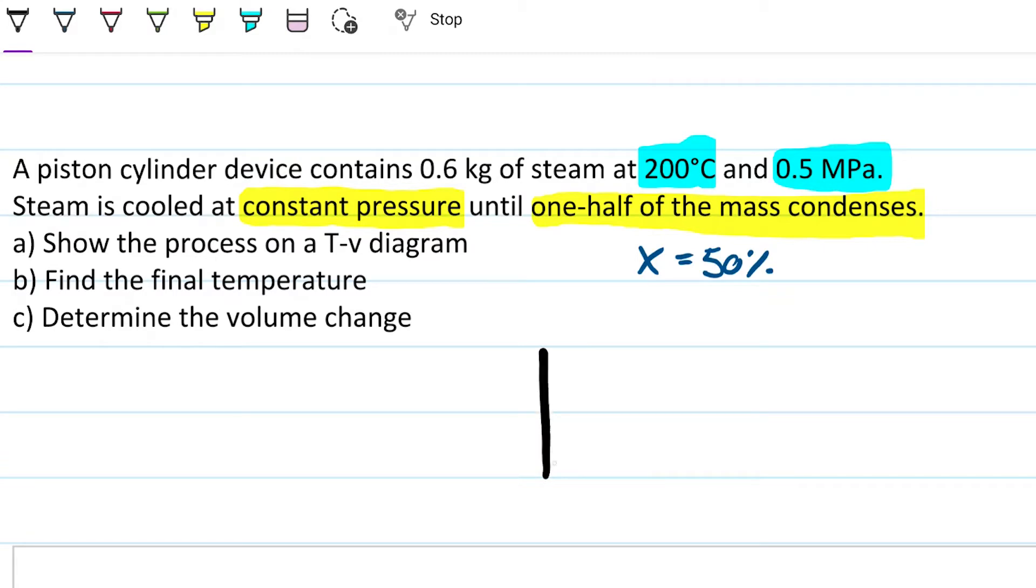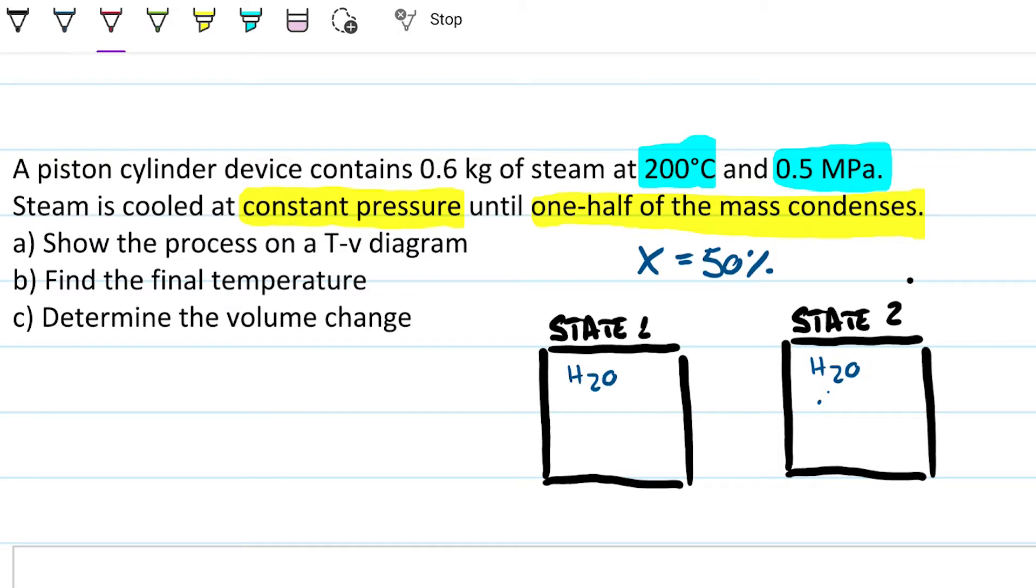If we were to draw what we like to do in my little boxes, the two states: State one, we're dealing with water on both states. In the first state, this guy is at 200 Celsius and 0.5 megapascals. Then from here to second state, we're losing some energy or some heat is going away from our system. And then we have, we don't know the temperature, but we know the pressure is also 0.5 because it's a constant pressure process. And we also know the quality is 50%. I have 50% of the mass in the form of liquid, 50% in vapor. That's pretty much all I need.